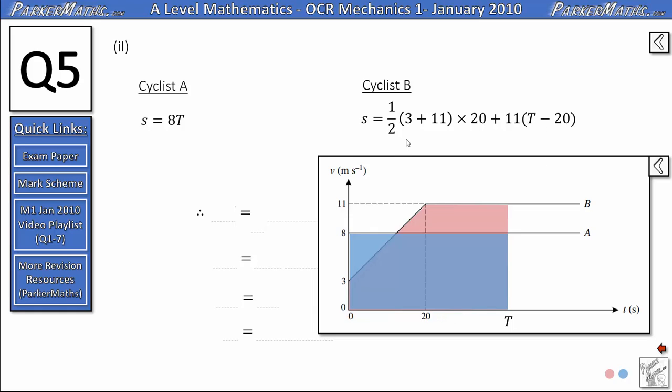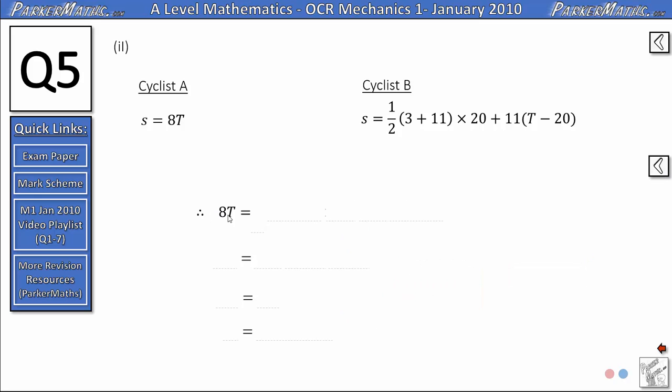Now that we have an expression for the displacement of both cyclists we can use the fact that we want their displacement to be the same at the point when they overtake. So all we need to say is that 8T equals this expression here. We'll simplify this a little bit by multiplying out brackets. First of all we'll do 3 plus 11 that's 14, half it's 7, 7 times 20 is 140.